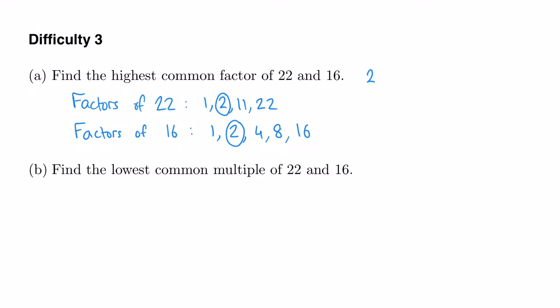In part B we are looking for the lowest common multiple of 22 and 16. That means we want to find the smallest number that's in the 22 times table and the 16 times table. And we can do this by listing out the first few multiples of each and seeing when we've got a number that appears in both lists.